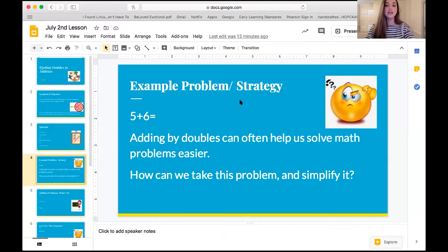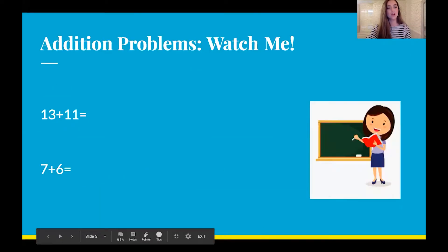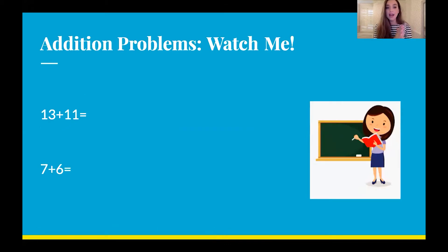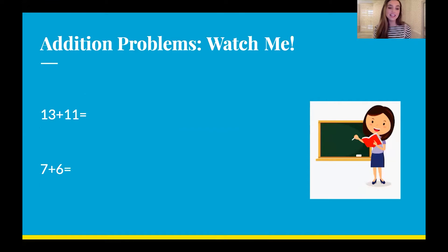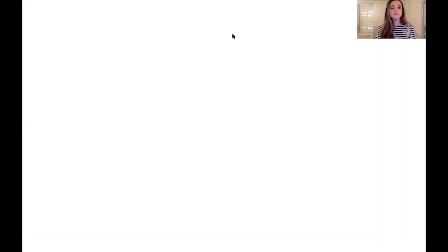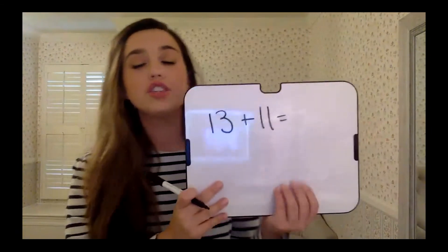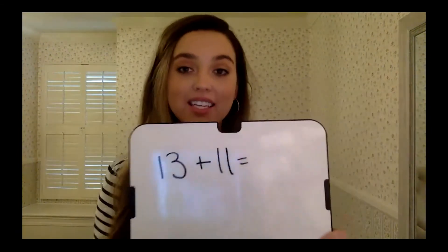Let's move on to the next slide. We know this is 11. Now I'm going to do the next problems — let's do them together. Get a preview of these questions: it is 13 plus 11 and seven plus six. Let's only worry about 13 plus 11 first. So 13 plus 11 — I'm going to write that on my whiteboard. There are actually a couple of different ways that you guys can make doubles in this case.